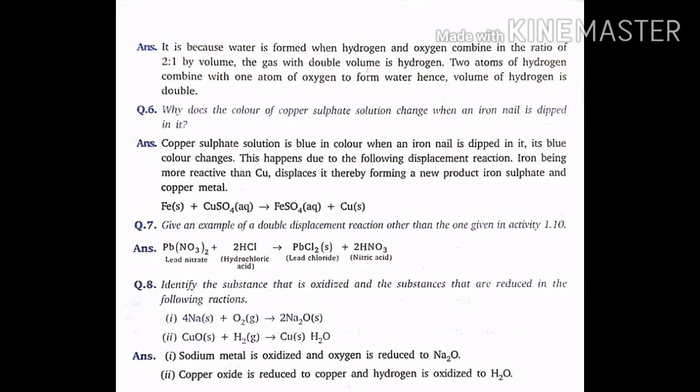Question number 8. Identify the substance that is oxidized and the substance that are reduced in the following reactions. 4Na plus O2 gives 2Na2O. Here the states are given as solid, gaseous, and solid. Solid state, oxygen in the gaseous state and Na2O in the solid state. Second one, CuO plus H2 gives Cu plus H2O. Here the sodium metal is oxidized to Na2O and the oxygen is reduced to Na2O. Second one, copper oxide is reduced to copper and hydrogen is oxidized to H2O. In the first equation, in order to find out the substance that is oxidized and reduced, recall in terms of electrons, loss of electrons and gain of electrons.